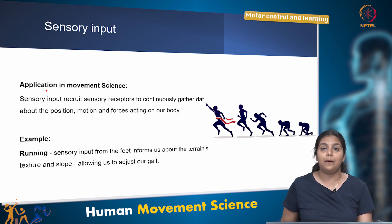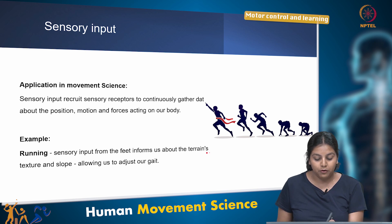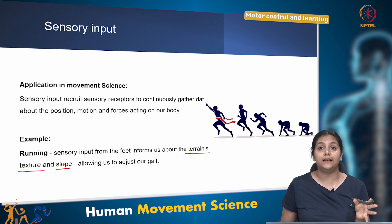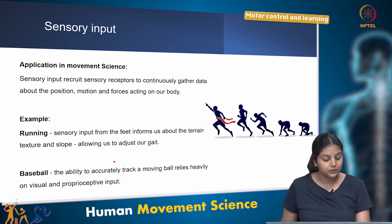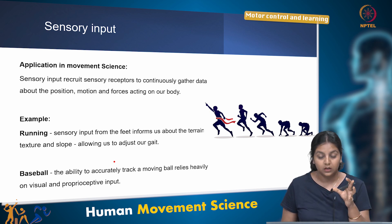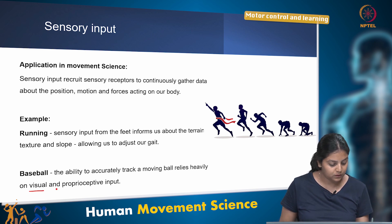For example, during running, sensory input from the feet informs you about the terrain, texture and slope, and accordingly the body adjusts its gait or running technique. Another example is baseball, where the ability to accurately track a moving ball relies heavily on visual and proprioceptive input.